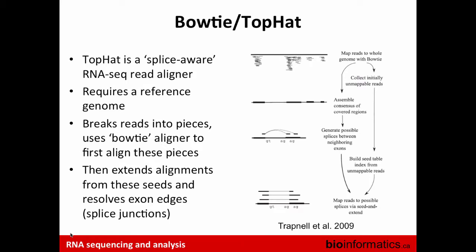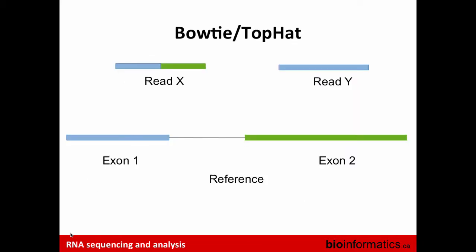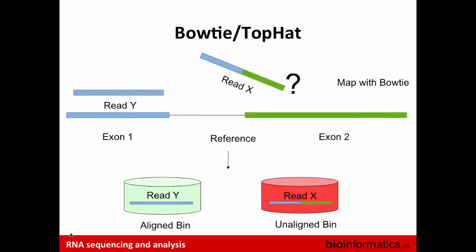How does Bowtie work with TopHat? Bowtie is the back-end aligner that TopHat utilizes. TopHat is splice-aware and requires a whole genome reference. It takes the reads, breaks them into small chunks, maps those to the whole genome, and uses that information to build a splice dictionary. Let's take an example: we have two reads, read X and read Y, a reference genome with exon 1 and exon 2 and an intronic region in between. Read X spans two exons while read Y only spans one exon.